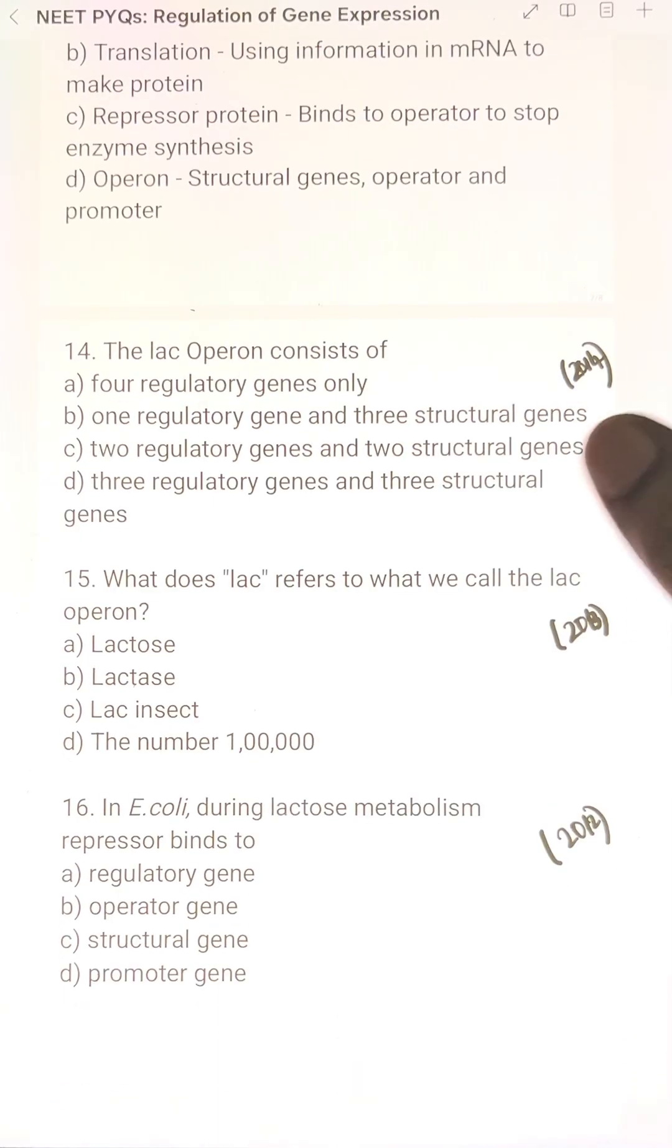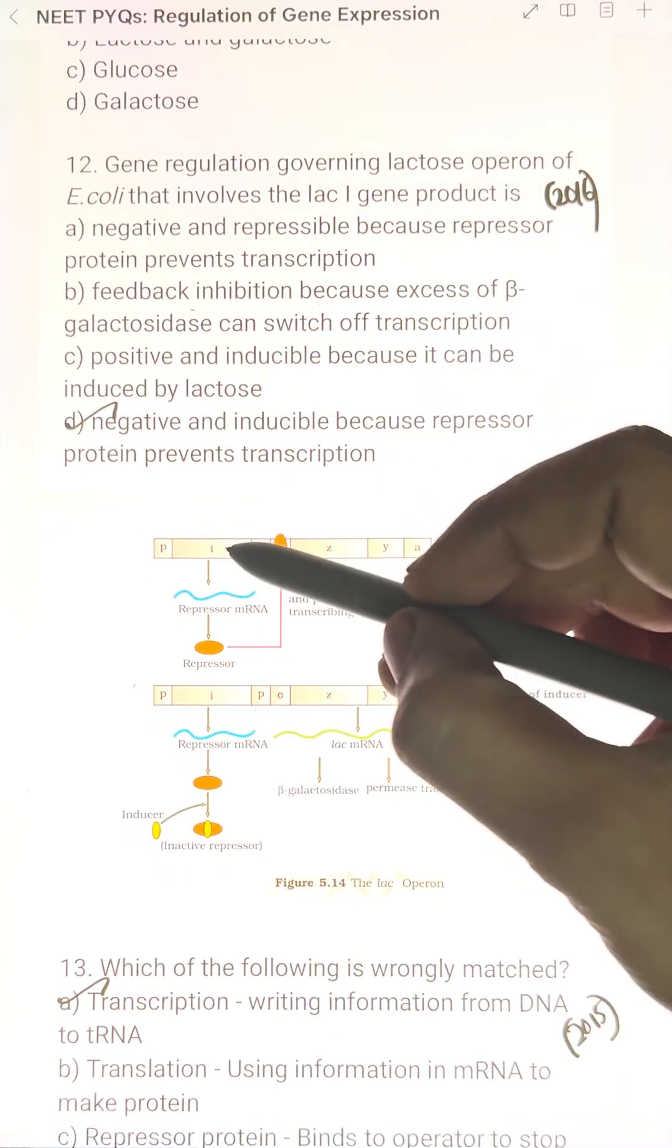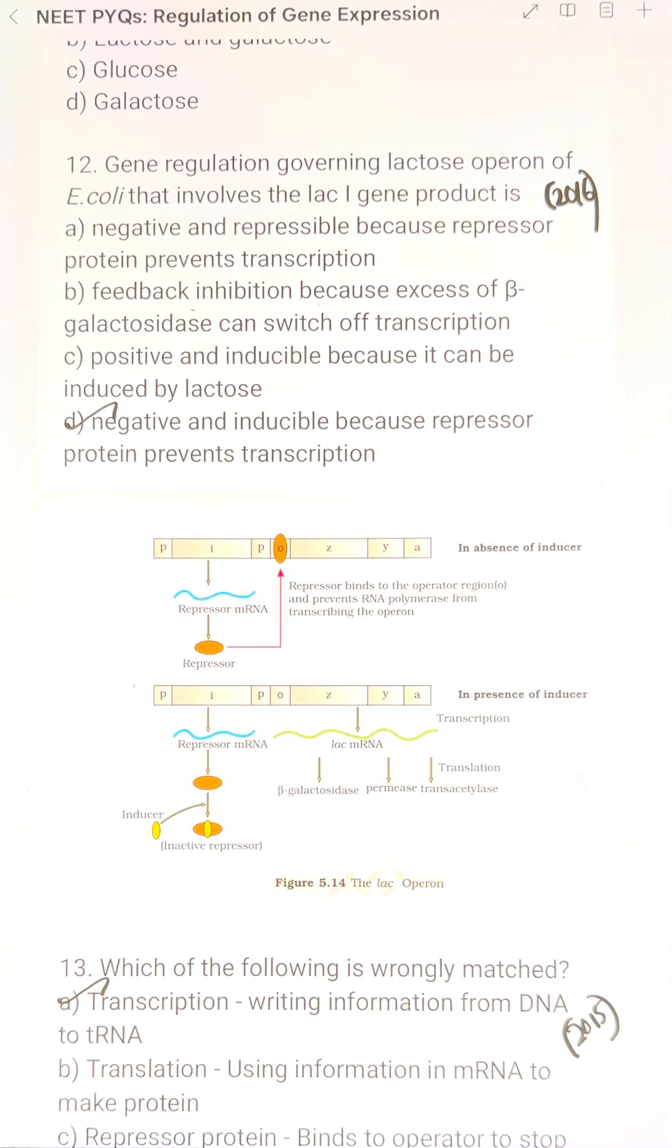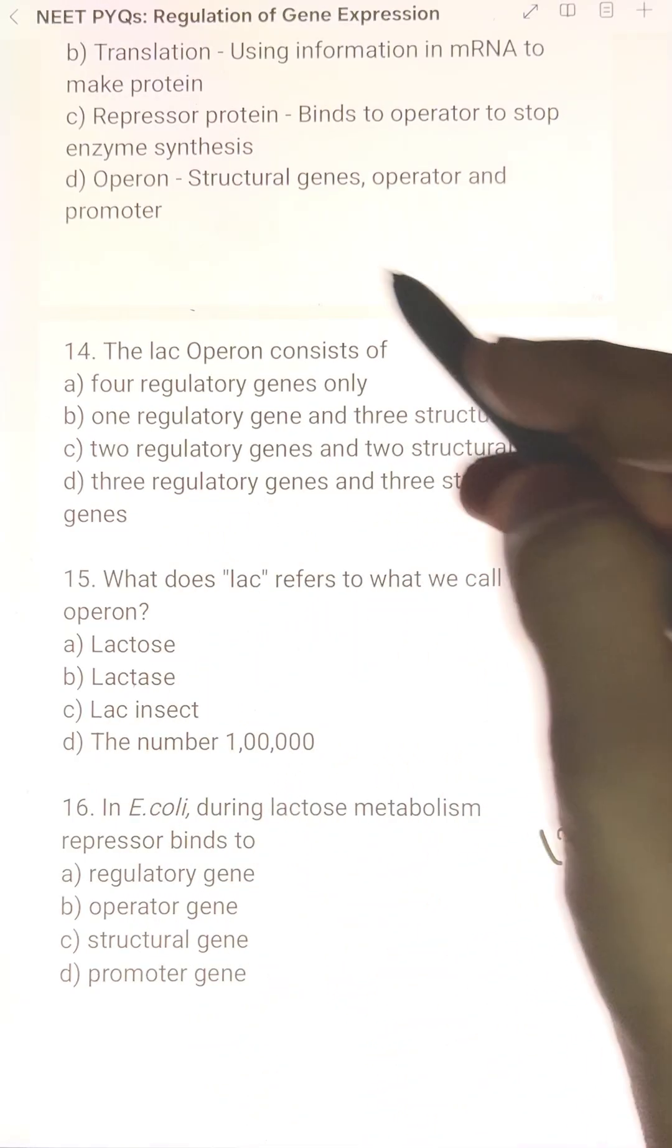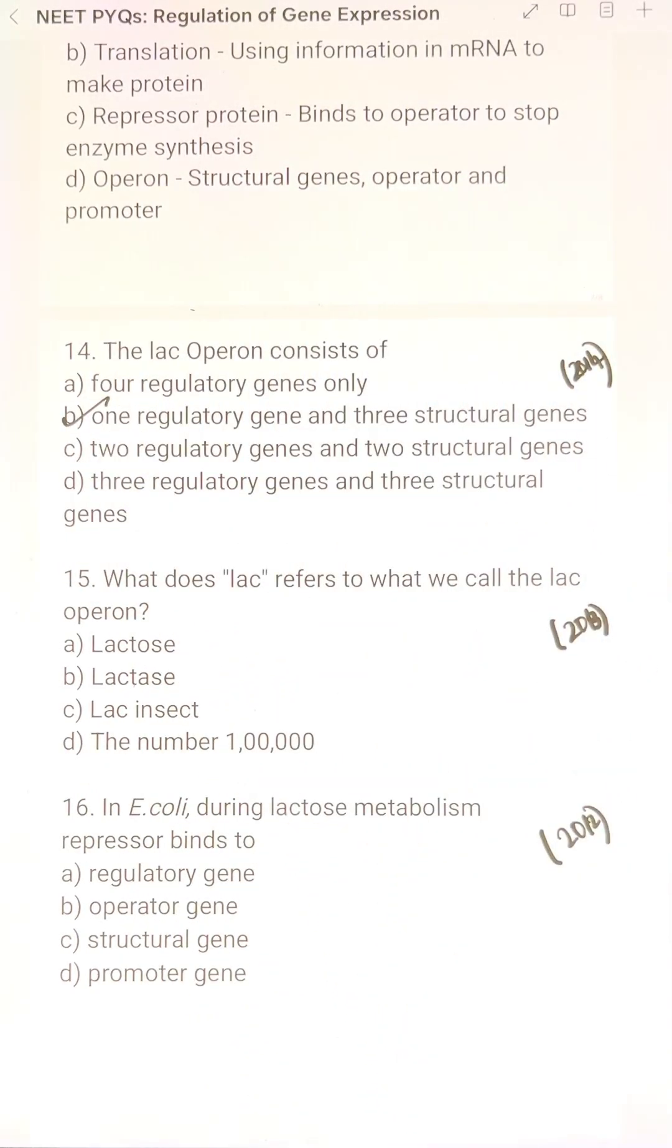The lac operon consists of - in the lac operon there is one regulatory gene and three structural genes. So the answer is one regulatory gene and three structural genes. Option B is the right answer.